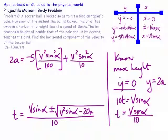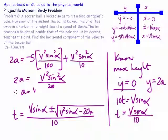So eventually we find an expression for a. It works out that 2a equals v² sine² alpha on 20, therefore a equals v² sine² alpha on 40.